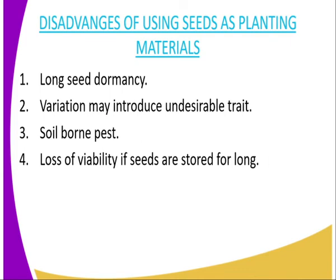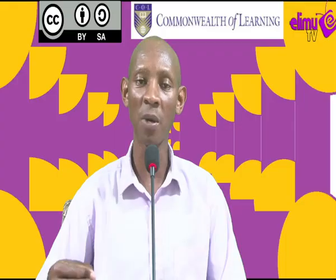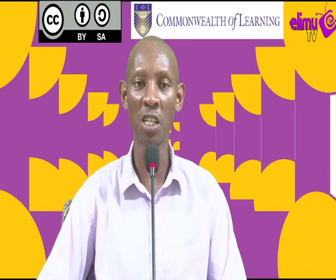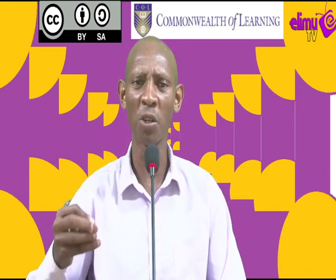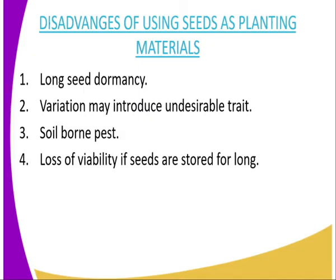What are the disadvantages of using seeds as planting material? One: long seed dormancy. Seeds which have long seed dormancy will take a long time to germinate, or may not germinate at all upon planting, and therefore that is a limiting factor. Two: variation may lead to the introduction of undesirable characteristics or traits, such that after cross-pollination it leads to production of crop varieties which are less resistant to pest attack and diseases. Three: soil-borne pests. If soil-borne pests attack the seed upon planting, they will eat away the embryo, and therefore germination of the seed will not take place, reducing the germination potential of the seed and lowering the plant population.